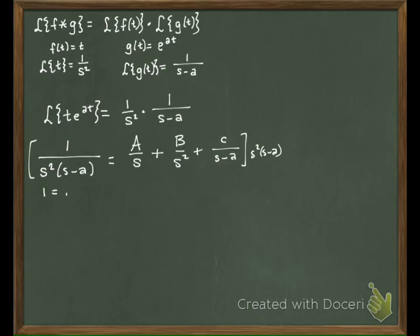The A gets multiplied by S and S minus A. The B only gets multiplied by S minus A, and the C gets multiplied by S squared. So we would have A S squared minus A S plus B S minus B A plus C S squared.